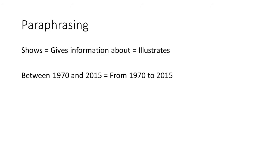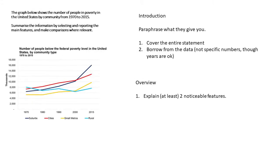Next we have the overview, which I think is the hardest but also the most important part. The marking criteria looks at the overview for a large part of your score. That's why it's a good idea to write it early rather than last — if you run out of time and you don't have an overview, you're in big trouble. An overview is basically about finding the main features of the data.